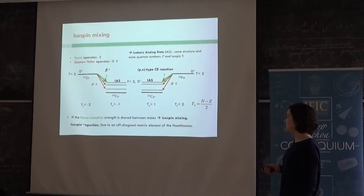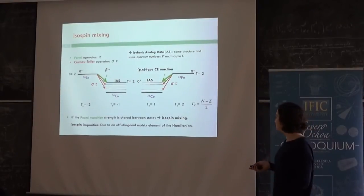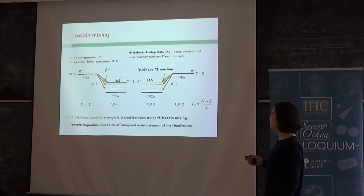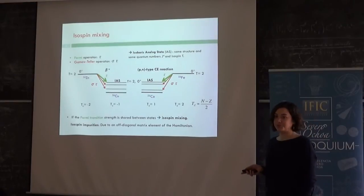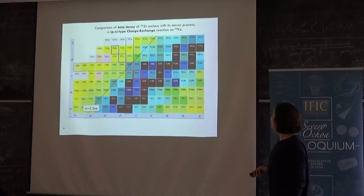And so in this case you would have isospin impurities. This means that one level can have mainly one specific value of the isospin, but also would have a small component of the isospin of the neighbor, for example. And this produces isospin impurity and this is due to the off-diagonal matrix element of the Hamiltonian.